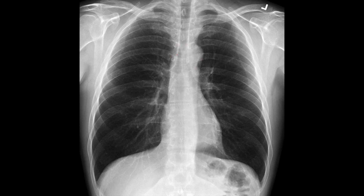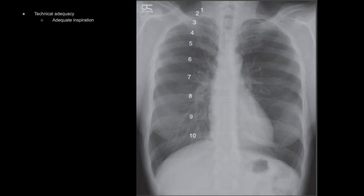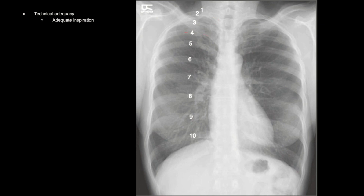I'll go over more detail in my more advanced lecture, but this will be a preliminary overview. Technical adequacy means several different things, and it's extremely important. One component is adequate inspiration — you want to see the posterior ribs, which are more horizontal or even angling upward to some degree, and then they start to angulate downward toward the feet as the anterior ribs. You want to see about nine to ten of them on the posterior aspect, with the diaphragm at or below that level. Inadequate inspiration can lead to vascular crowding at the bottom of the lungs, which can make you mistake something normal for a consolidation or pathology that isn't actually there.